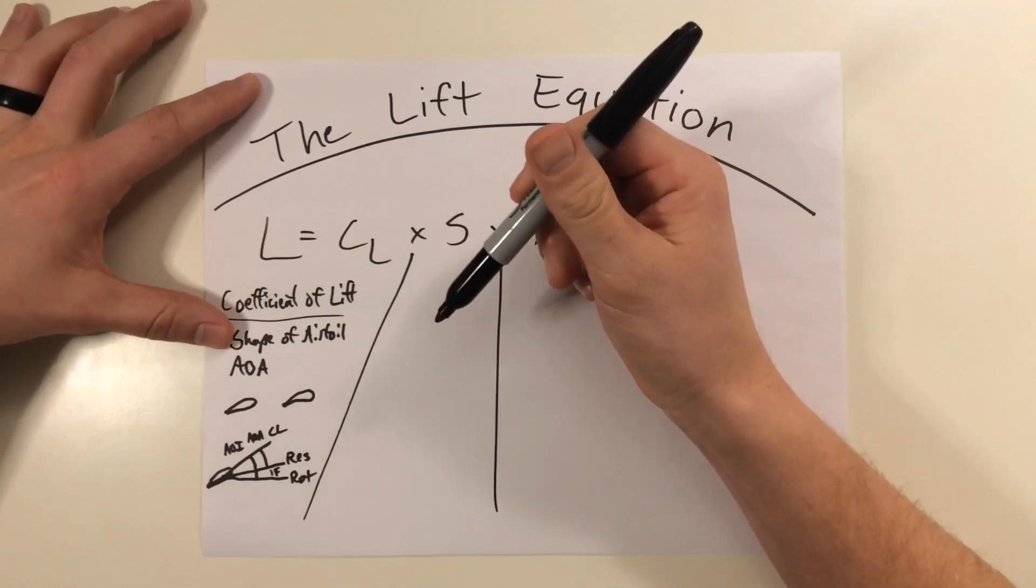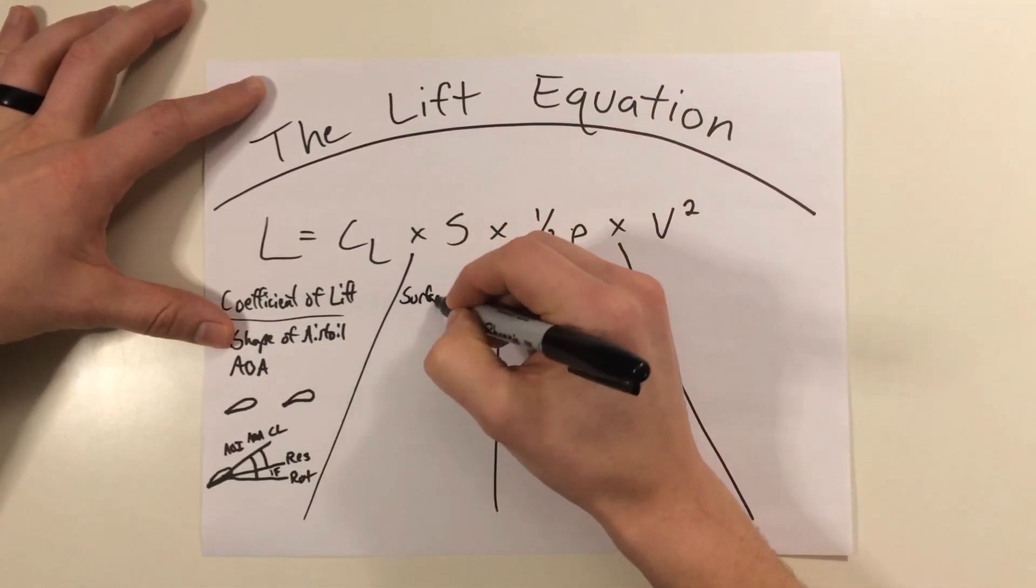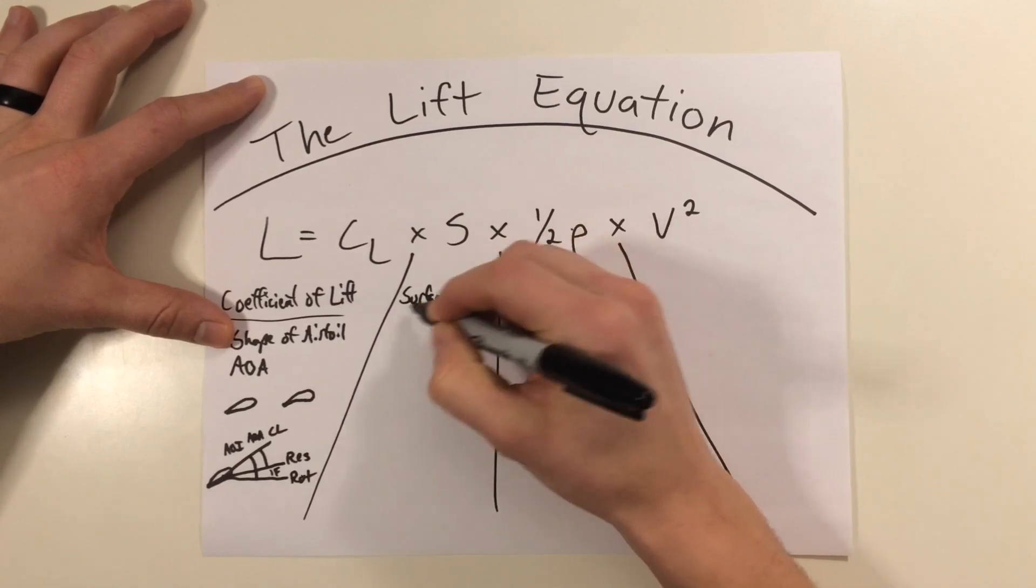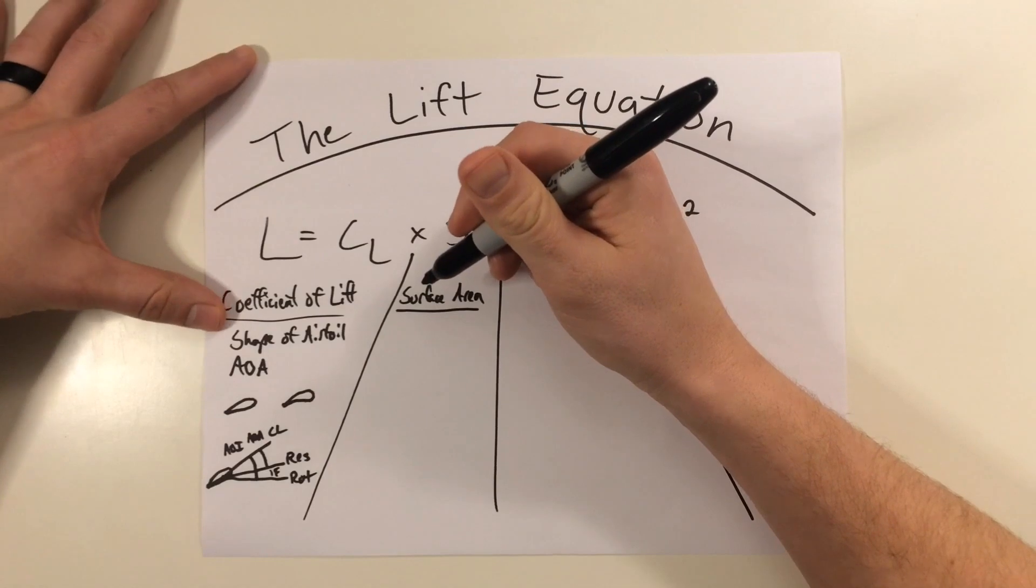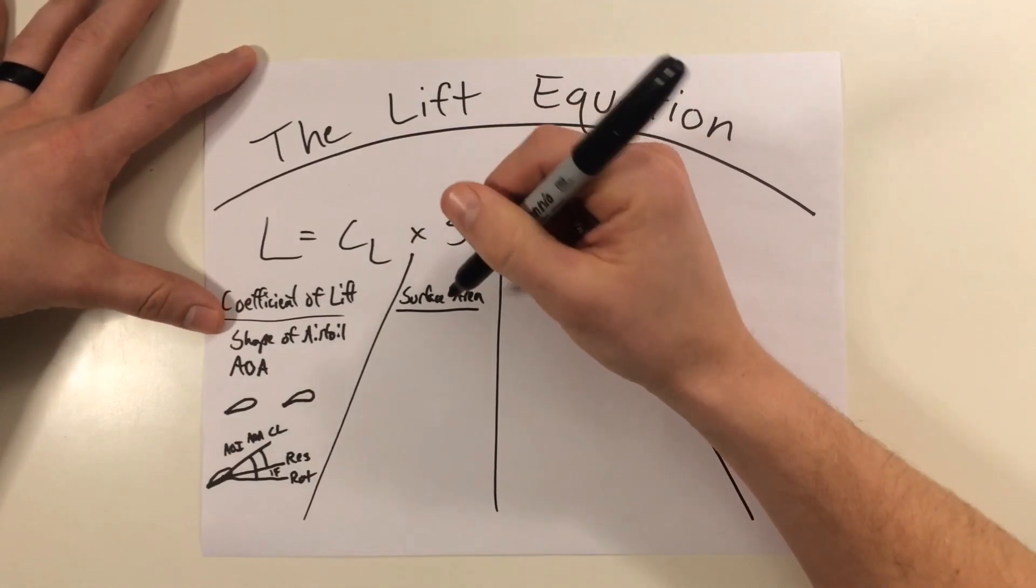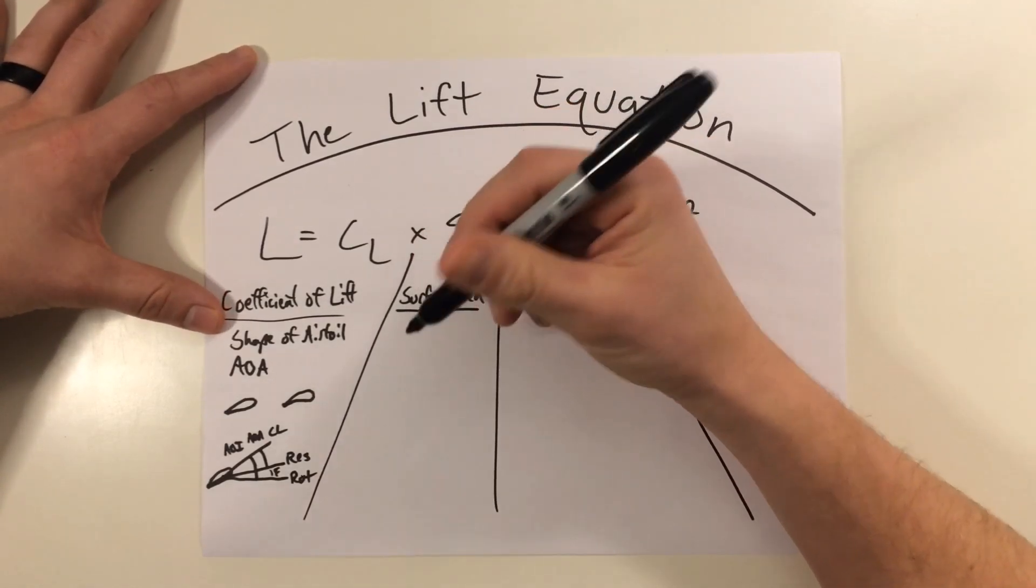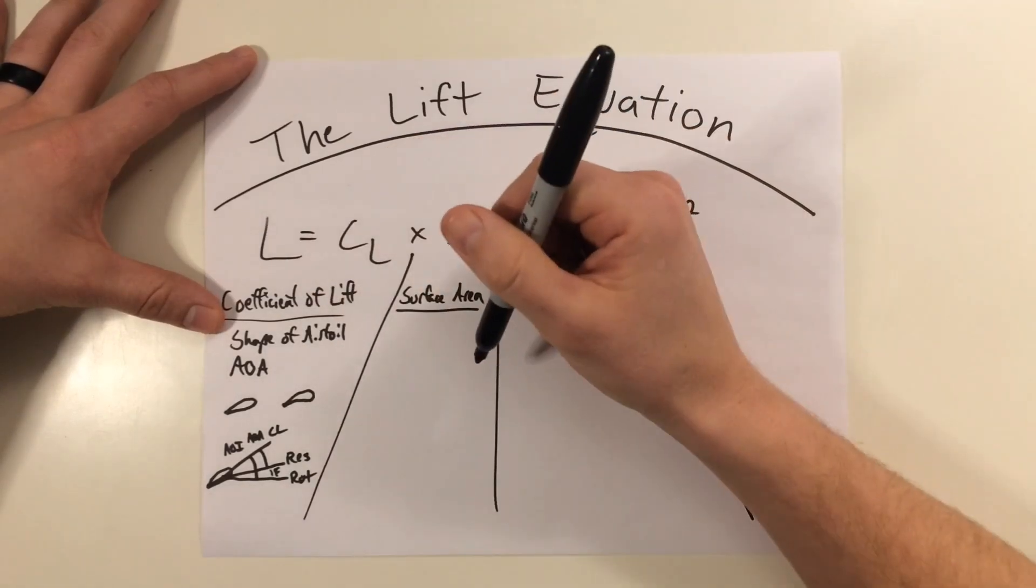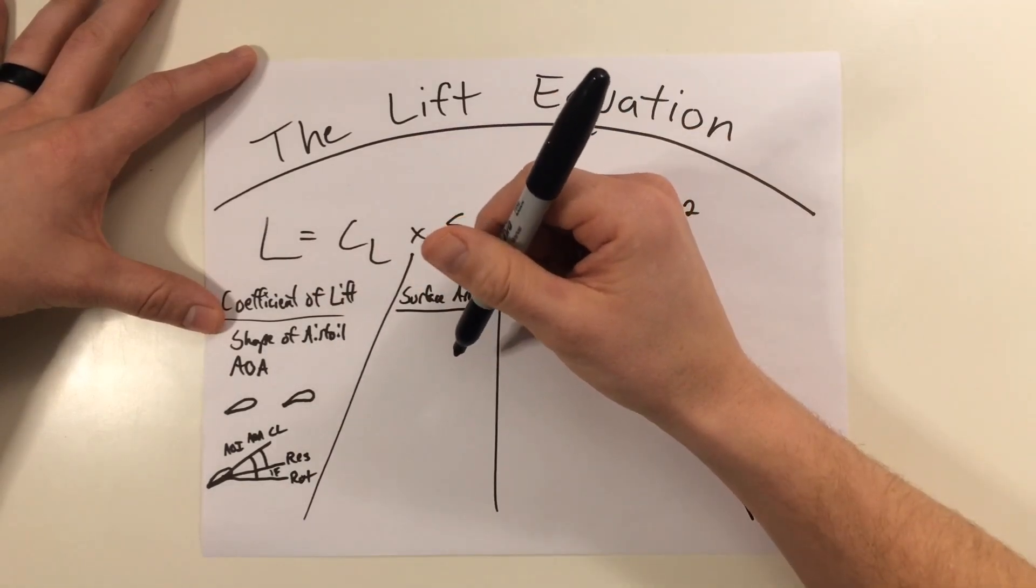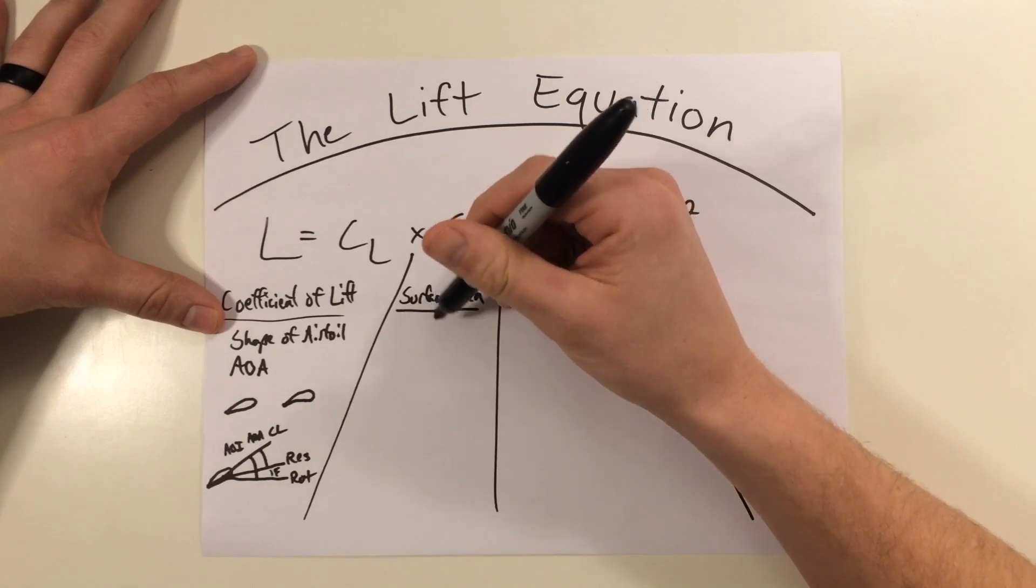The next element of the lift equation is surface area. So surface area refers to the general surface area of the airfoil or the rotor disc. Now, the larger the area, the more lift with all other parts constant and vice versa. This is generally thought to be unchanged and unaffected by the pilot. However, I'd like to consider rotor coning.